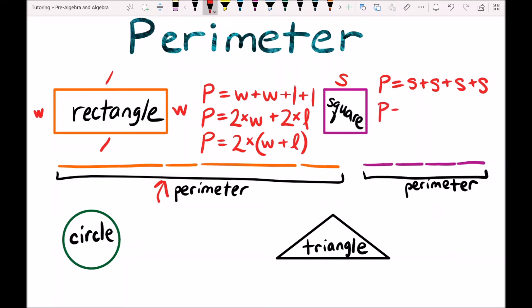So P is equal to 4 times S, because all the sides of the square are the same length and we have four sides on our square. Every square has four sides of equal length, so we can add the length of one side up four times or multiply 4 by the length of one side to get our perimeter.